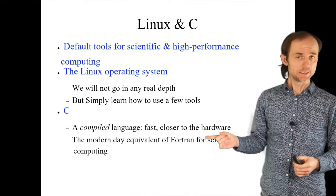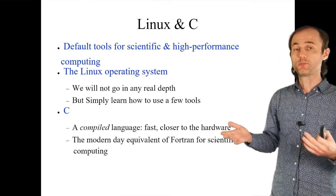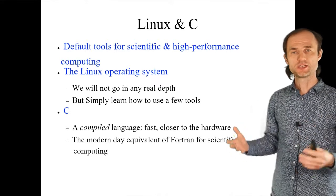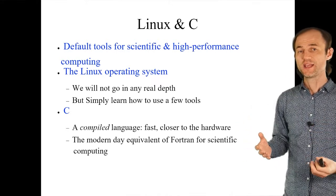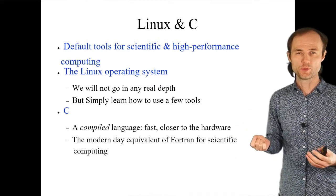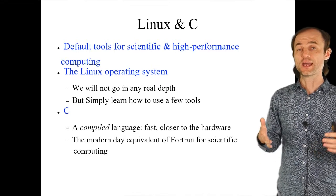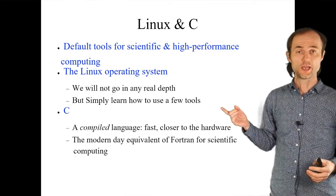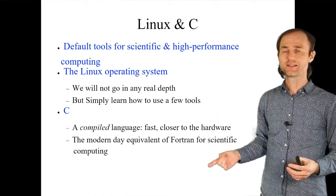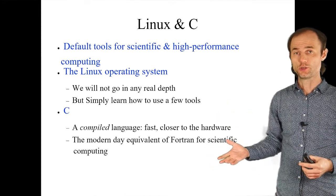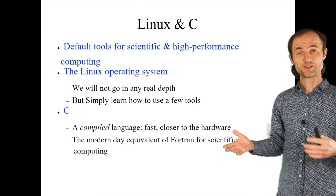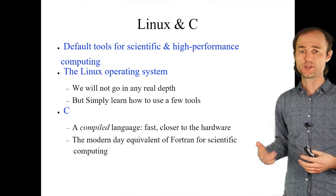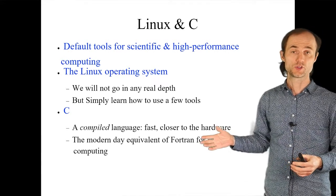Why C language and not Python? Python is good — it's nice and intuitive, but it's slow. If you actually want to create your own numerical algorithm, something that hasn't been done before, you cannot rely on Python. You can use Python to prototype it, but C is the language you go to for implementation — and maybe then call that new algorithm from inside Python.